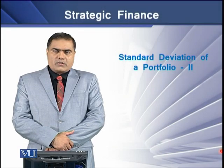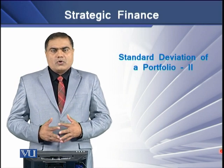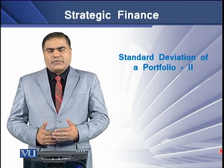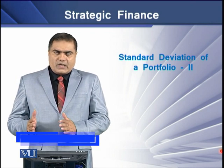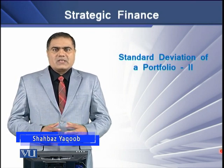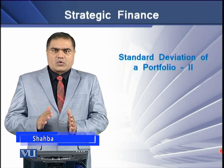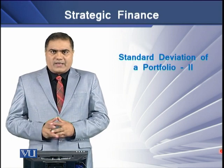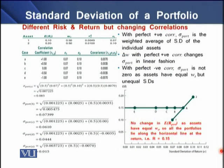Earlier we saw the implication of standard deviation of a portfolio upon diversification, where we studied a case of equal risk and return with changing correlations. Now let's take another case in a similar direction: we have different risk and return but changing correlations — that is the second case in our discussion.